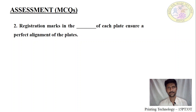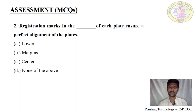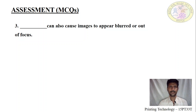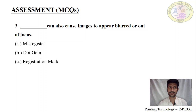Next question: Registration marks on each plate ensure the perfect alignment of the plate. Where are they placed? Lower, outer edge, center, or none of the above? Because during the printing process they are there, but during the finishing process they will be cut. Next: What can cause images to appear blurred or out of focus? If it is registered we get a fine quality of output. Options: misregistration, dot gain, registration mark, or none of the above.